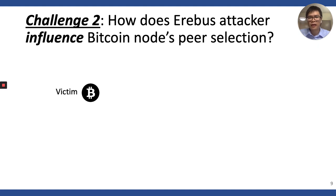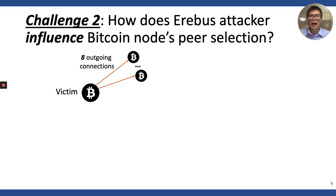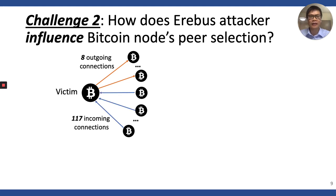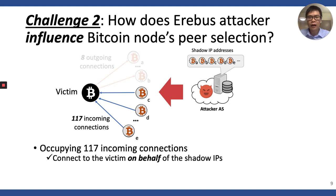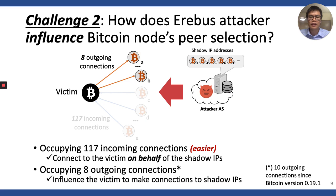Now we know that the attacker can control a lot of IPs. We discuss how the attacker resolves the second challenge: to influence the victim node's peer selection with the saddle IPs. To explain that, let me briefly describe the Bitcoin peer connection. Each Bitcoin node opens 8 outgoing connections to other peers and accepts up to 117 connections initiated by other nodes. So the attacker's goal here is to occupy all 125 peers of the victim with the saddle IPs. Occupying incoming connections can be done simply by connecting to the victim with the saddle IPs, and it's easy in general. On the other hand, the attacker must influence the victim to open connections to the saddle IPs, and this is much harder.